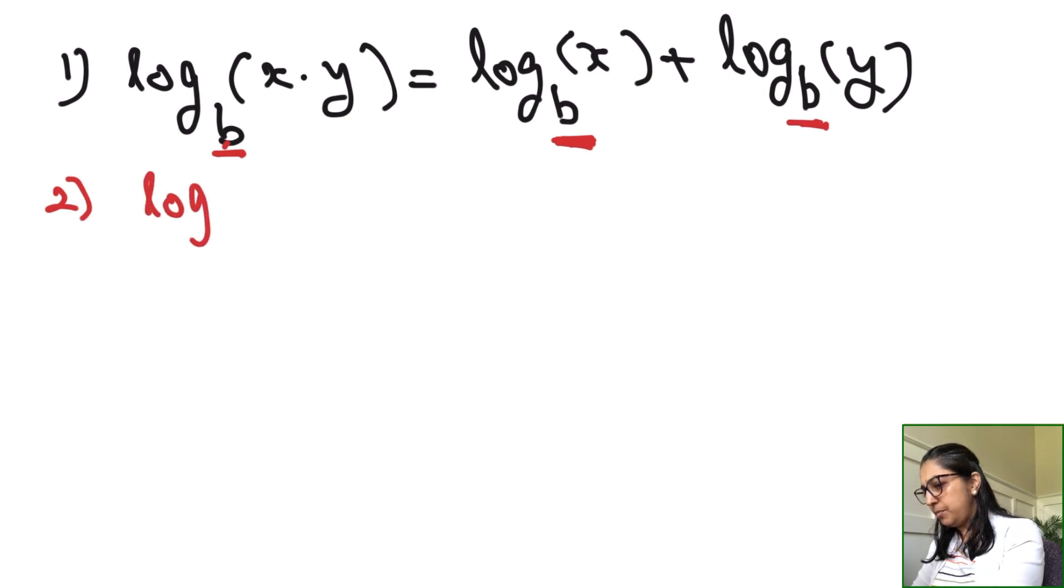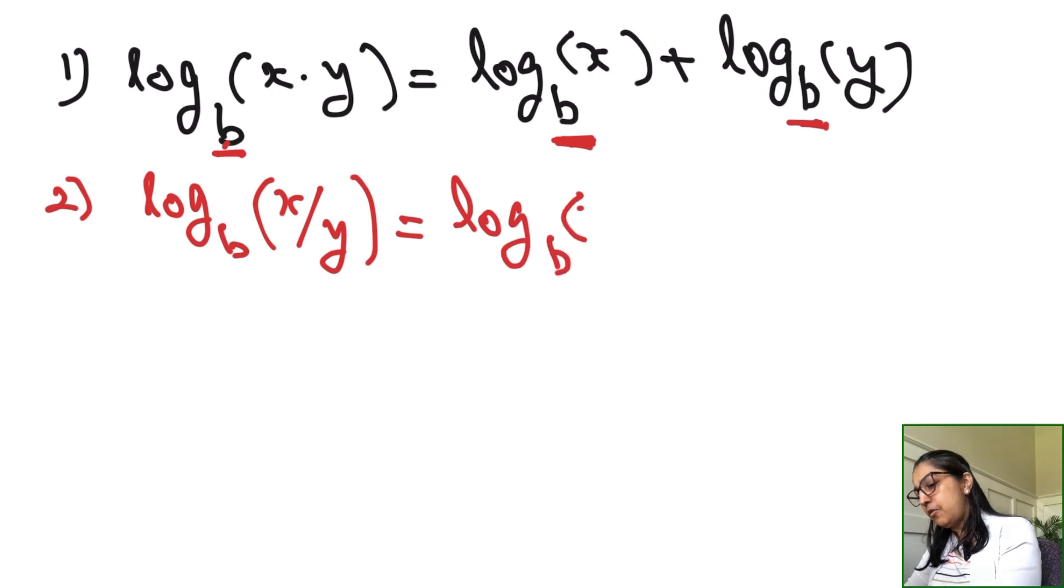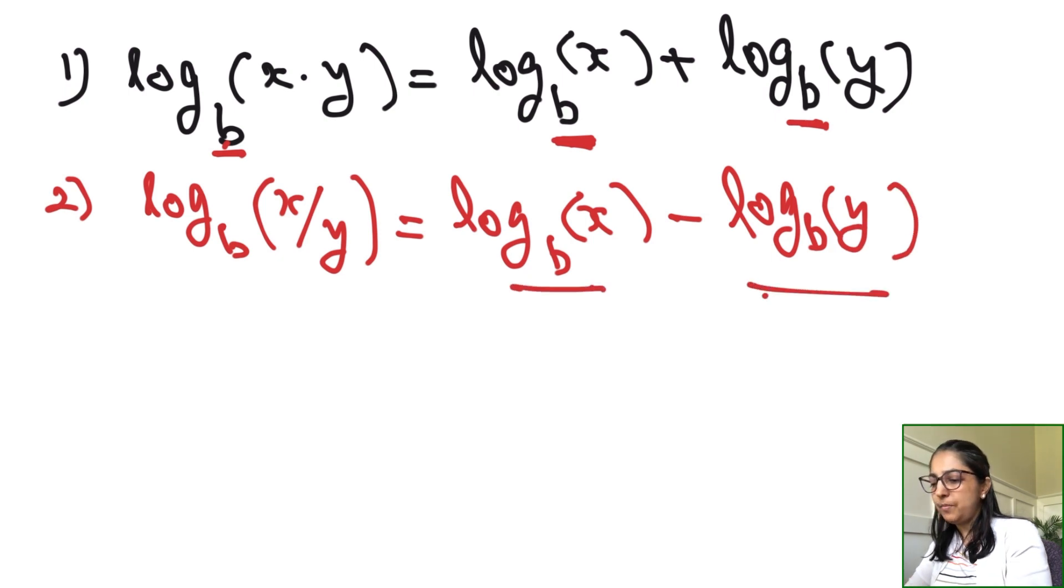The second property is the division property or quotient rule. When there is a fraction x over y, it's log_b(x/y) = log_b(x) - log_b(y). Meaning the numerator minus the denominator, both in logarithms. Again, this is the same base.